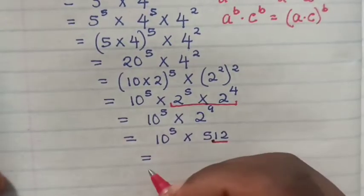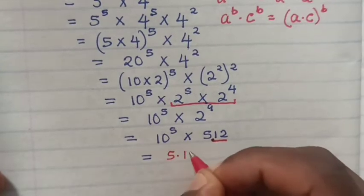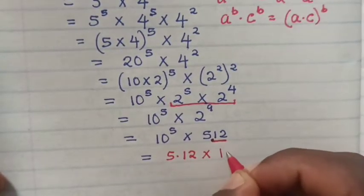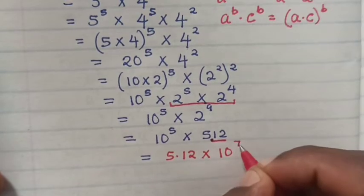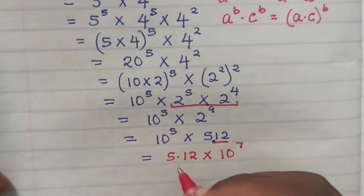So it will be 512 times 100. 100 is 10^2, so 10^2 × 10^5 is 10^7.